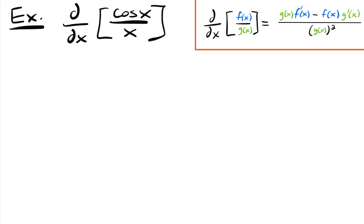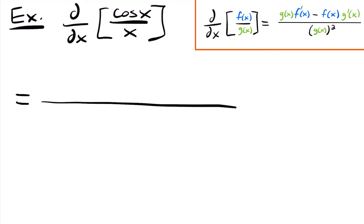Let's start by identifying what our two functions are. The easiest way is to look at what our function is in the top and what it is in the bottom. In this case, our two functions are cosine x and x. The derivative will be equal to the original denominator function, which is x, times the derivative of the numerator. We have cosine in our numerator.